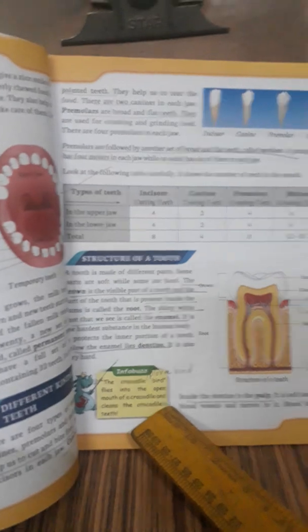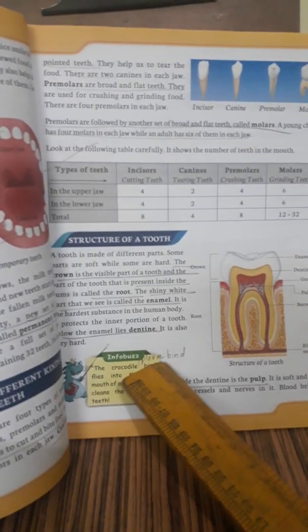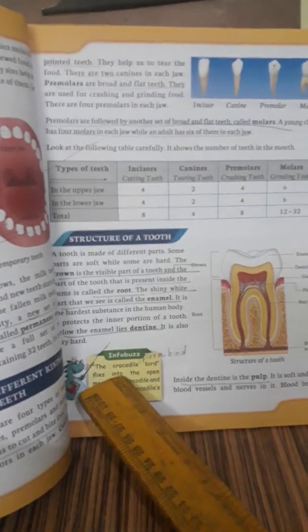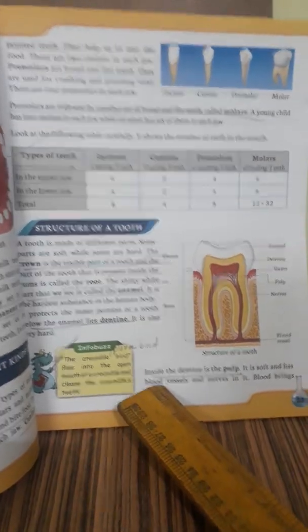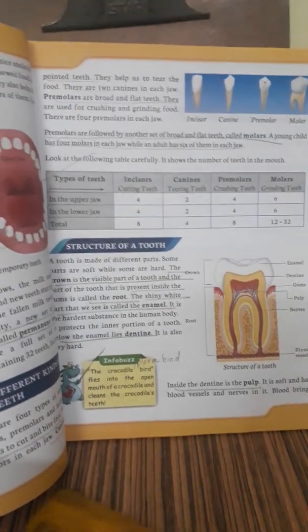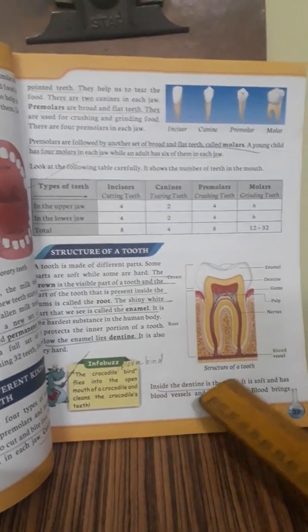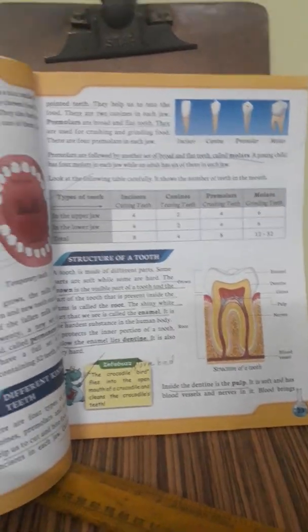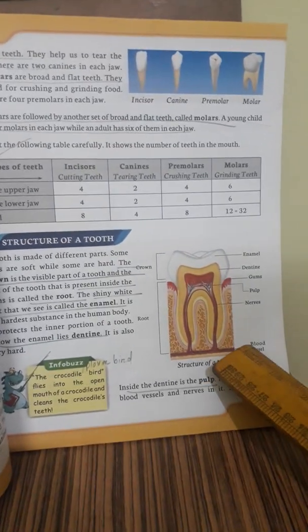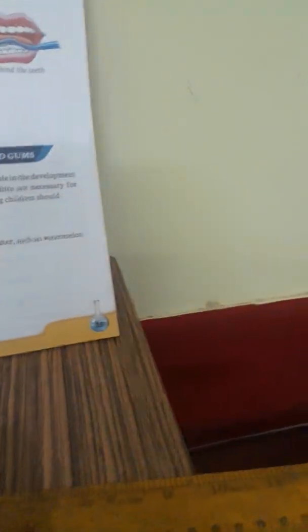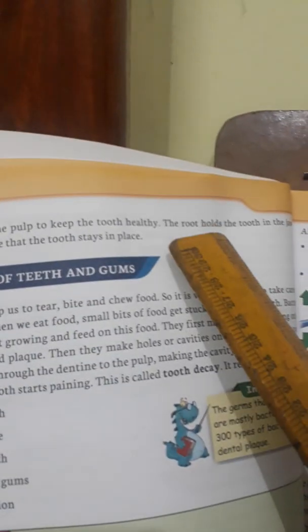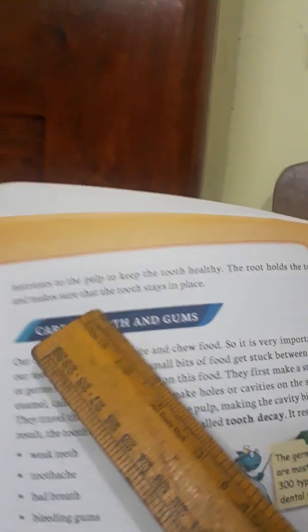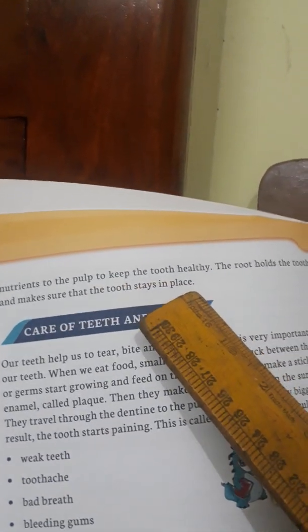The crocodile bird, also known as the plover bird, flies into the open mouth of a crocodile and cleans its teeth. Inside the dentine is the pulp, which is soft and has blood vessels and nerves in it. The pulp extends from the crown to the top of the root. The root holds the tooth in the jaw and makes sure that the tooth stays in place.